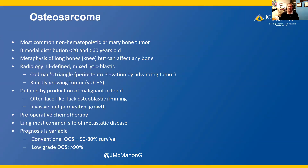The majority of osteosarcomas should be treated with preoperative chemotherapy. Parosteal osteosarcoma is one subtype that does not need preoperative chemotherapy, but most osteosarcoma variants should be treated with preoperative or neoadjuvant chemotherapy. Lung is the most common site of metastatic disease. The prognosis of osteosarcomas is variable — with conventional osteosarcoma, roughly 50 to 80% survival. However, the lower grade osteosarcoma variants have a much better prognosis of greater than 90% survival.